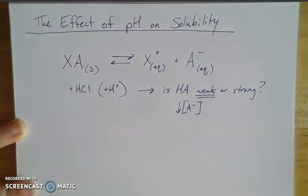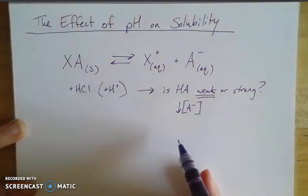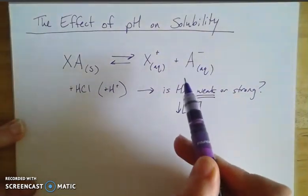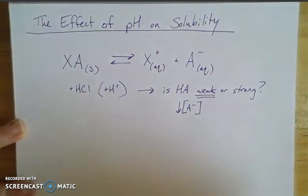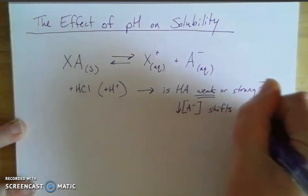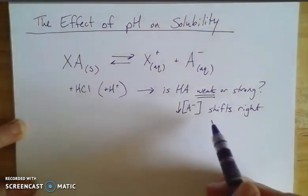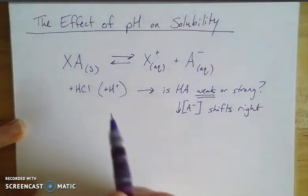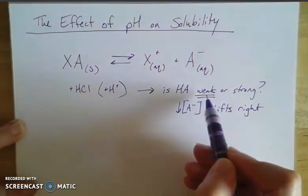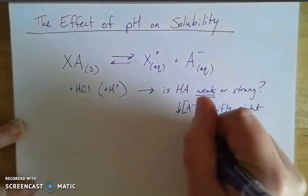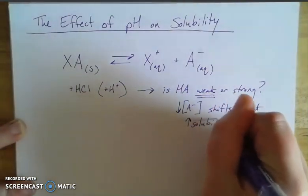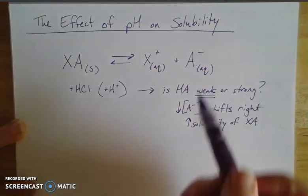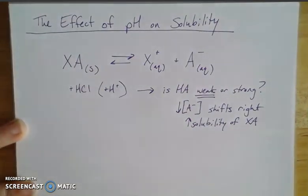So what would that do to the solubility? If I decrease this, if I think about Le Chatelier's principle, what would happen? I'm decreasing the concentration of my product. That's going to shift the reaction towards the products, shift it right. And if I shift the reaction right towards the products, that means I'm getting more of this solid into solution. So by adding the acid here, if that HA is a weak acid, then that's going to increase the solubility of XA. That's one way that if I wanted to get more in solution and I knew that this anion was coming from a weak acid, then this is one way I could do that.